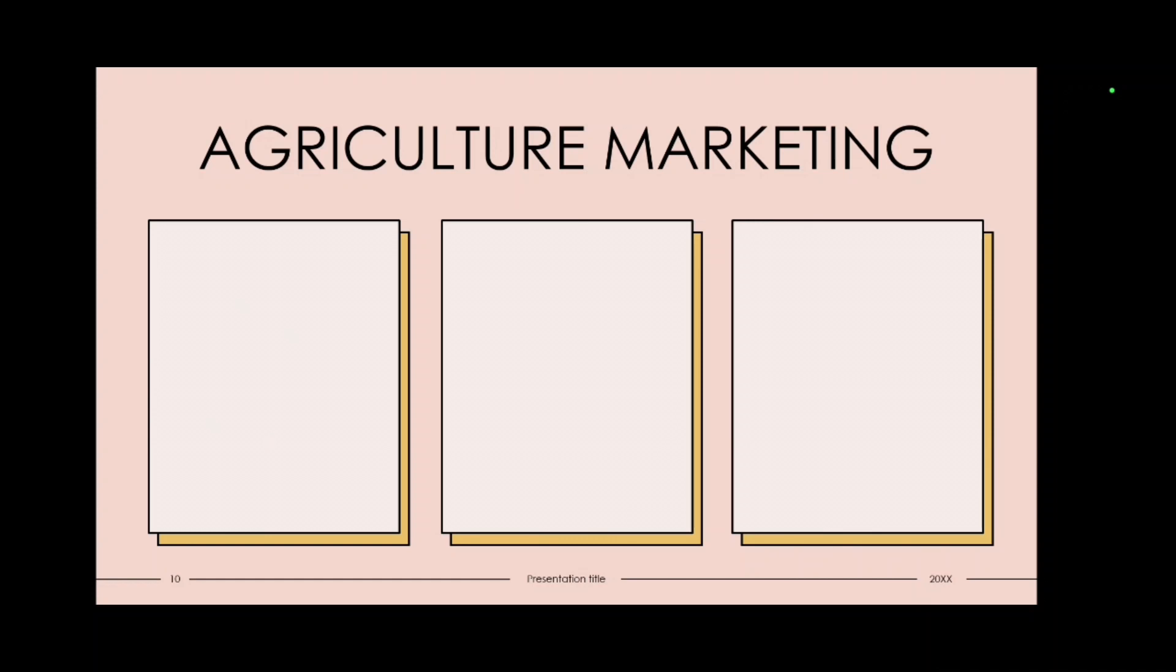Then comes agriculture marketing. This will be the last unit of your agriculture economics. First is classification of market. Second producer surplus. Under this you must have heard about marketed and marketable surplus. Very famous topic. Then marketing functions and efficiency. Then marketing risk. What is speculation? What is hedging? Then marketing cost, marketing margin and price spread.